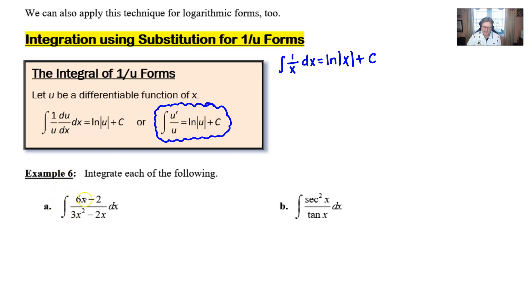So in example 6a, it's very likely that because the denominator is of a higher power than the numerator by 1, that we could very likely let u be the entire denominator. It's certainly worth trying. And what we soon notice is that when we take that derivative, u prime or du over dx, we get 6x minus 2.